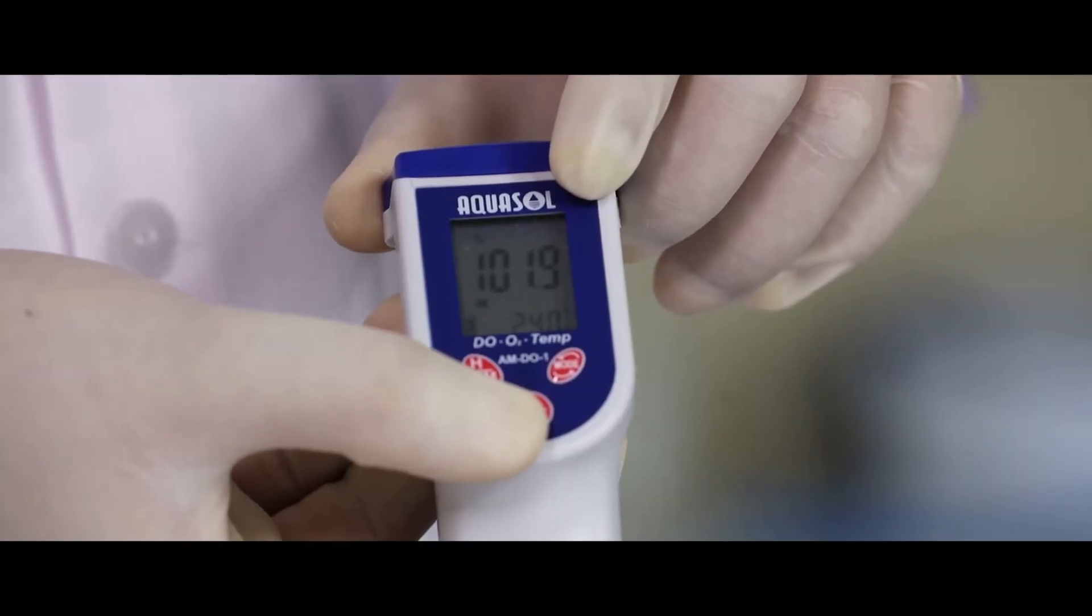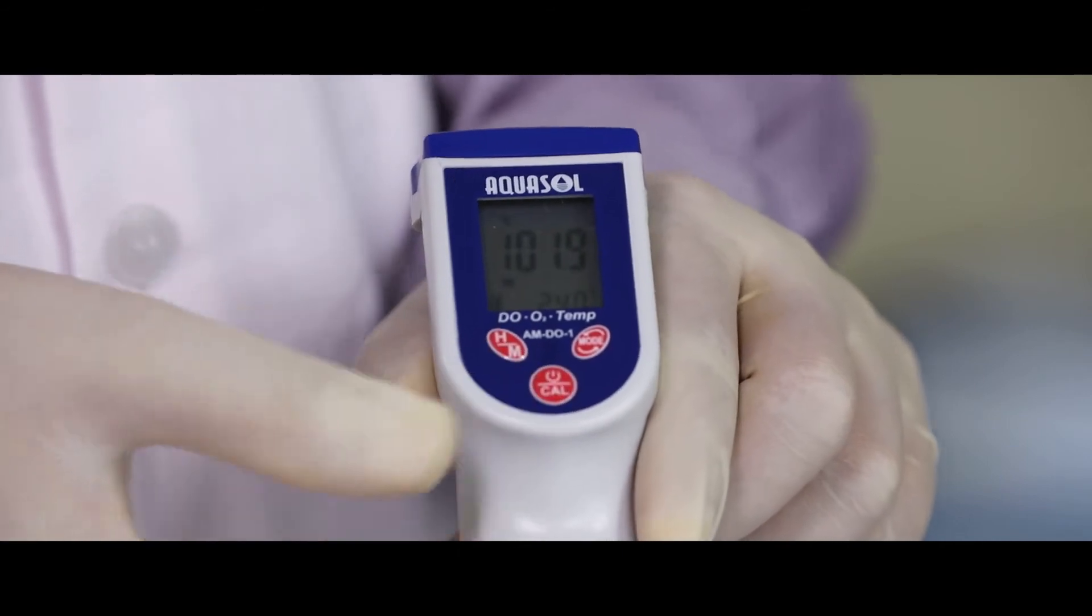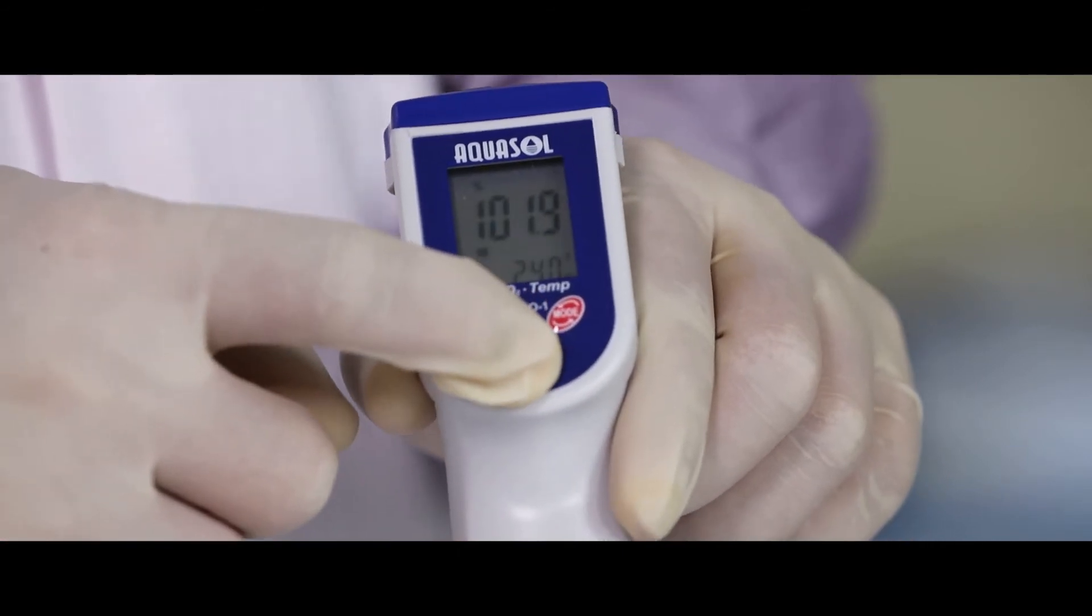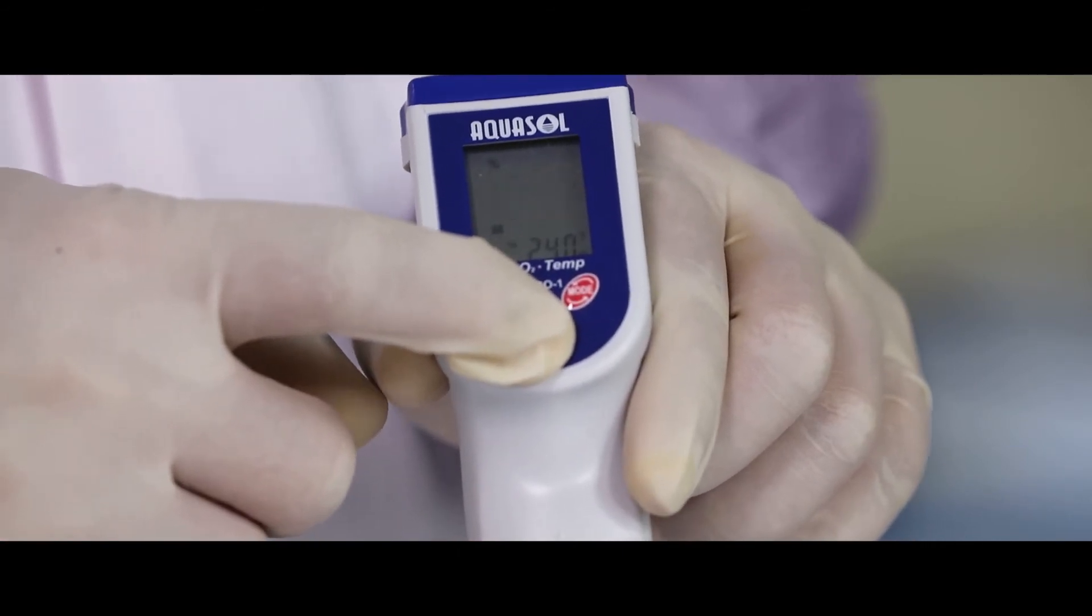Once the meter reaches a stable value, press the CAL key on the meter and the meter will calibrate it to 101.7. Calibration done.